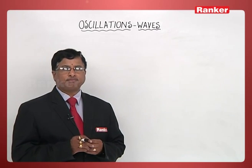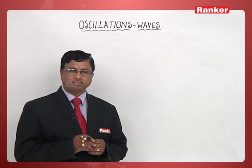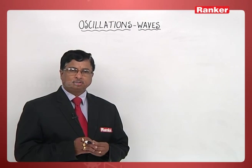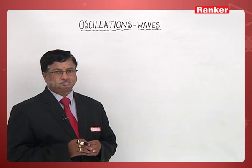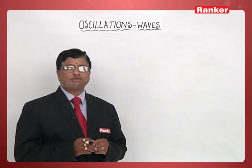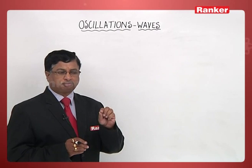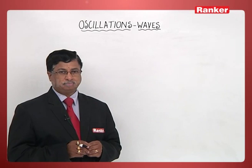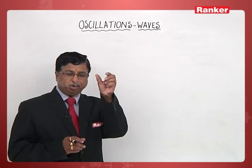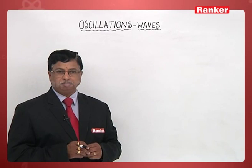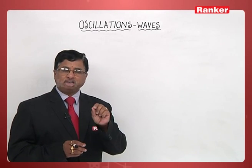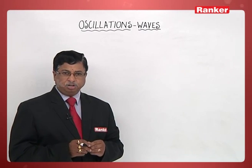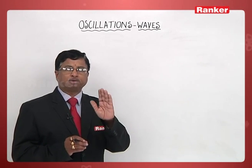What is the formation of harmonics in the case of organ pipes? That's what we are going to take up. Organ pipe is of two types: one is an open pipe and one is a closed pipe. In the air column present inside the organ pipe, stationary waves are going to be formed and due to that, different harmonics we are going to observe.